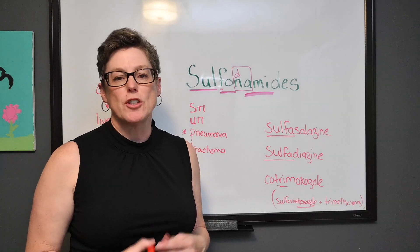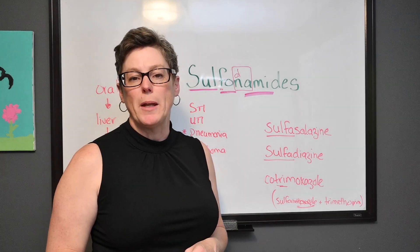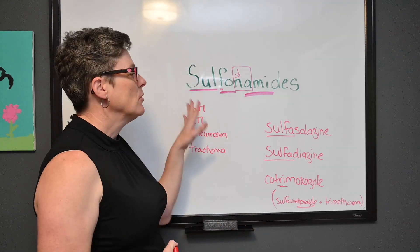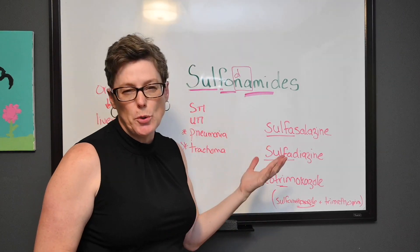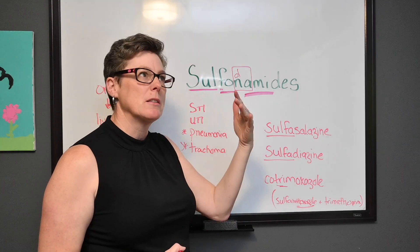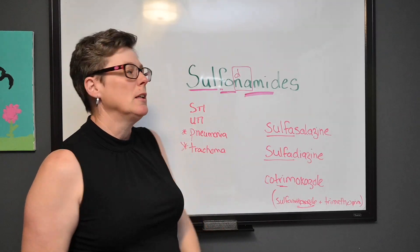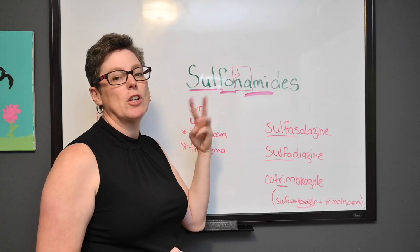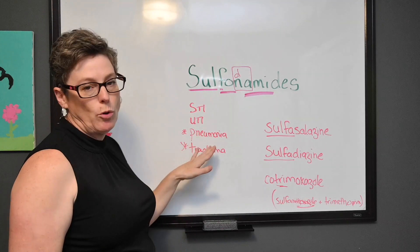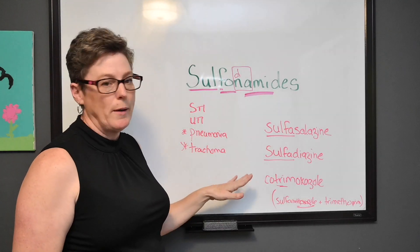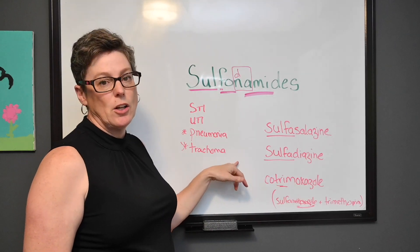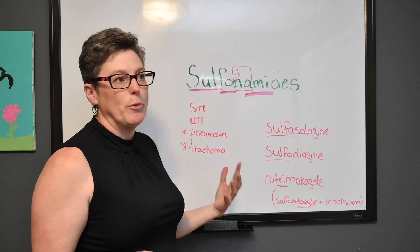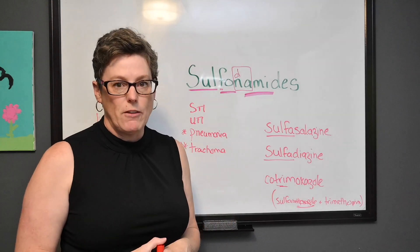Sulfonamides or sulfa drugs are used to treat gram-negative and gram-positive bacterial infections. In terms of clues, when you look at the word, you can use the first two letters to help you remember STIs and UTIs, and then you'll have to memorize the next two: pneumonia and trachoma. Trachoma is actually a leading cause of blindness, and pneumonia includes H. influenzae and E. coli, those kinds of things.